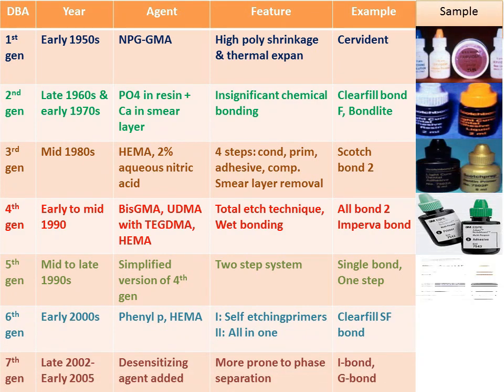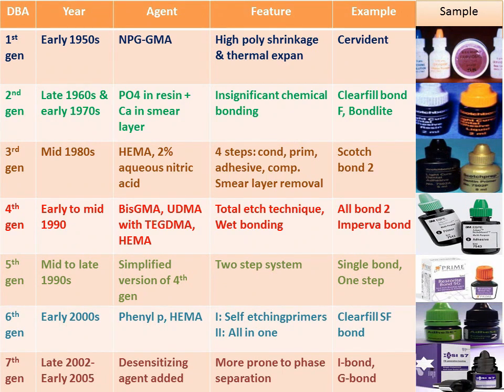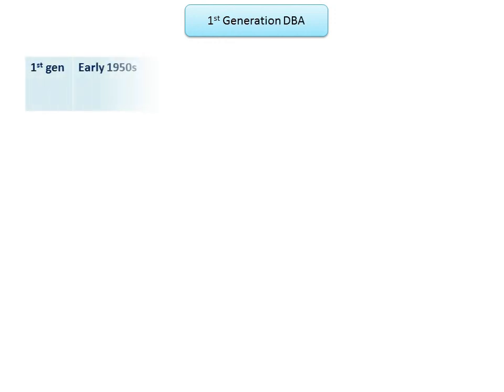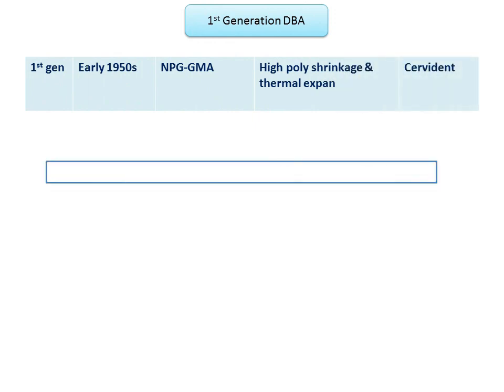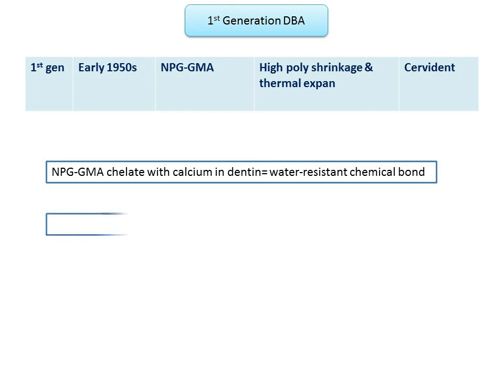The first generation of dental bonding agents were introduced in the early 1950s. The development of NPG-GMA — N-phenylglycine glycidyl methacrylate — which is a surface active comonomer, was the basis of the first generation dentinal adhesives. Theoretically, NPG-GMA was supposed to chelate with calcium in dentine to form a water-resistant chemical bond to dentine, but its drawback was that the bond strength produced was very low.